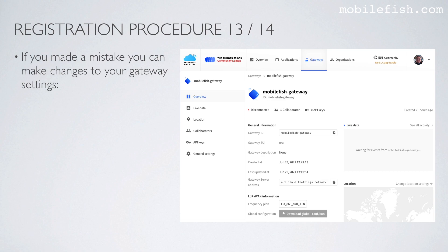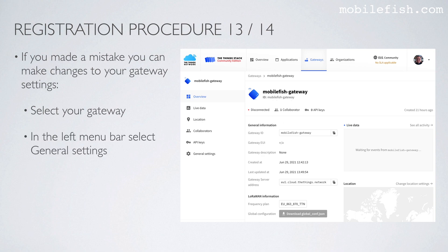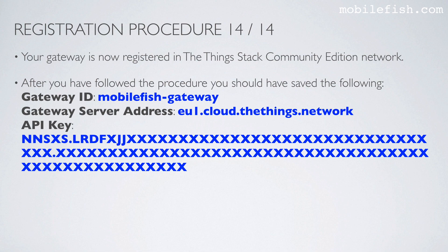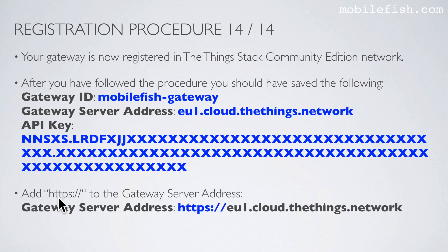If you made a mistake, you can make changes to your gateway settings by selecting your gateway and in the left menu bar selecting General Settings. Your gateway is now registered in the Things Stack Community Edition network. After following the procedure, you should have saved the following: the Gateway ID, the gateway server address, and the API key. Add HTTPS to the gateway server address — the gateway server address will look like this.